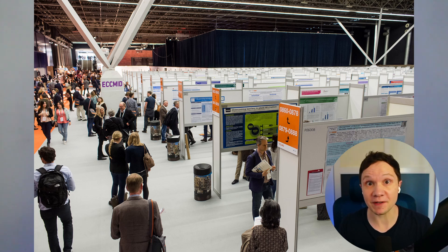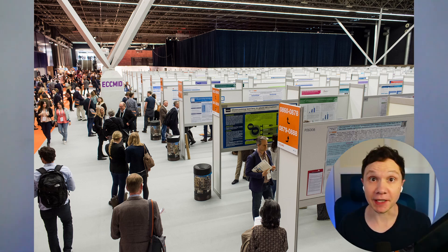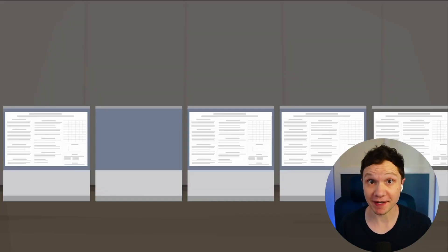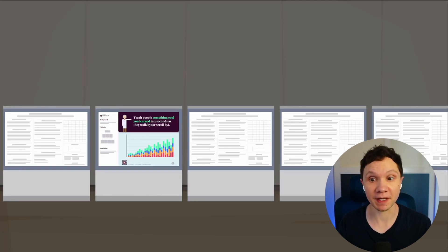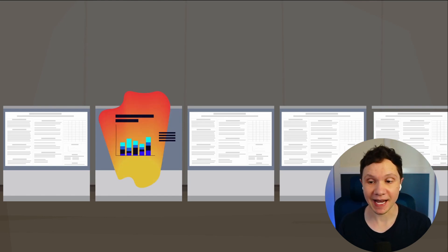There's one really important way that this pop-out effect of contrast applies to your science communication, and that's scientific posters. There are many articles out there about how to get attention on your scientific poster, how to create an eye-catching poster — and the answer is literally just contrast. Just make your poster look different than the other posters beside it. Not a little different, like a change of heading color, but really, really different.